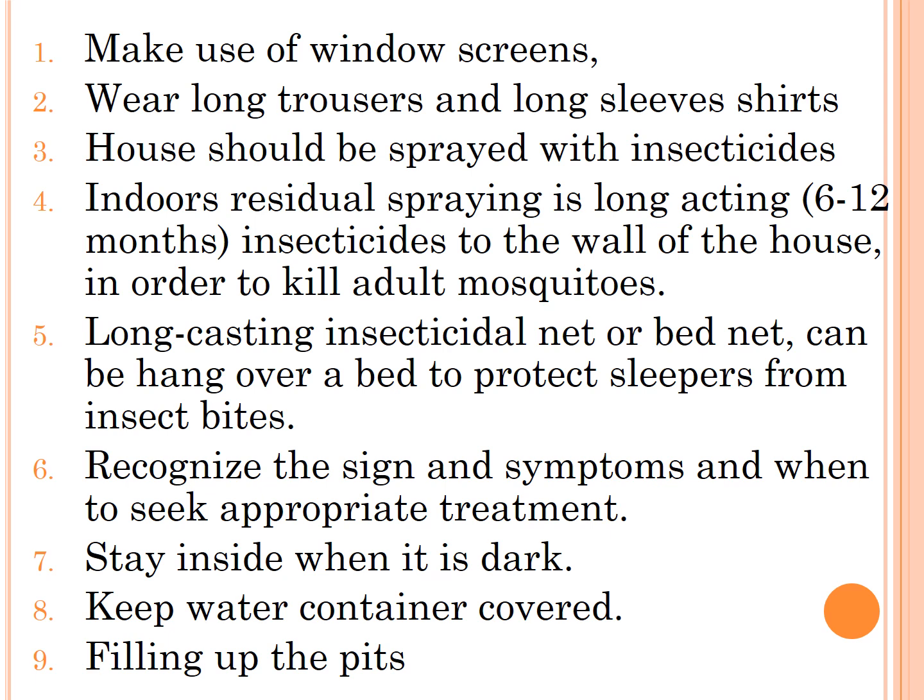Prevention instructions include making use of window screens, wearing long trousers and long-sleeve shirts, and spraying houses with insecticides. Indoor residual spraying uses long-acting insecticides (lasting 6 to 12 months) applied to walls to kill adult mosquitoes. Long-lasting insecticidal bed nets can be hung over beds to protect sleepers from insect bites. Other measures include recognizing signs and symptoms, staying inside when it is dark, keeping water containers covered, and filling up pits.